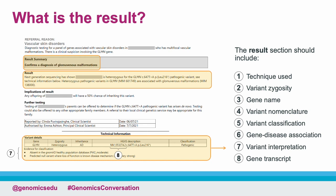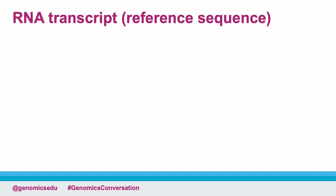Number 8, under technical information, shows that the gene variant is described in relation to its RNA transcript, also known as its reference sequence, to provide a more complete variant description. Most clinicians reading a report will not need to drill into this level of detail, but we will cover it briefly for those who are interested and for the sake of completeness, before moving on to the rest of the report.